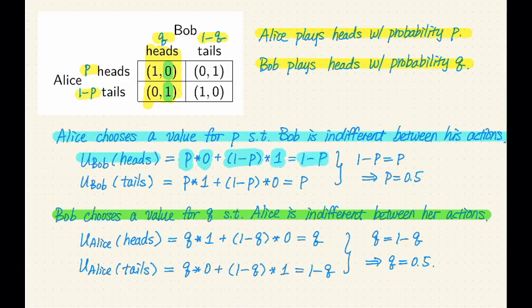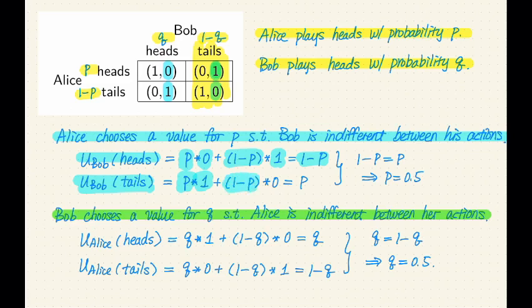Similarly, if Bob plays tails, we look at the right column. With probability p Alice plays heads and Bob gets utility 1; with probability 1 minus p Alice plays tails and Bob gets utility 0. So Bob's expected utility for playing tails is p. We equate the two — 1 minus p equals p — and solve for p, which gives p equals 0.5. This means Alice should play heads and tails with equal probability to make Bob indifferent between his two actions.